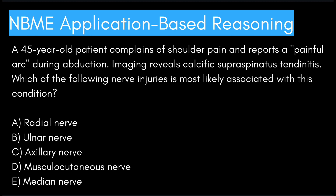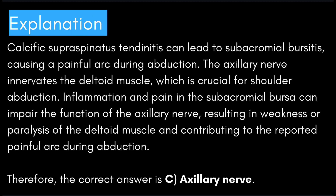Calcific supraspinatus tendonitis can lead to subacromial bursitis, causing a painful arc during abduction. The axillary nerve innervates the deltoid muscle, which is crucial for shoulder abduction. Inflammation and pain in the subacromial bursa can impair the function of the axillary nerve, resulting in weakness or paralysis of the deltoid muscle and contributing to the reported painful arc during abduction. Therefore, the correct answer is C: axillary nerve.